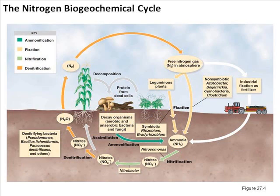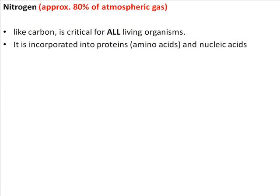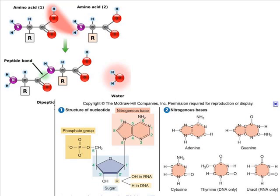We're going to leave carbon and look at the nitrogen biogeochemical cycle. Just as carbon is critical for all living organisms because it's found in all macromolecules, nitrogen is also critical — it's an atom that's part of the proteins, amino acids, and nucleic acids found in every single cell. These are the same images I showed you for amino acids and nucleotides. Besides carbon, you can easily find nitrogen in both these molecules — the nitrogen atoms are shown in purple in the amino acids joining together to form a polypeptide.